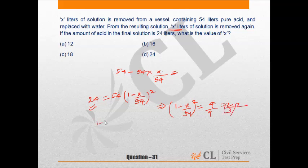So, 1 - X/54 = 2/3, which equals 1 - 1/3. Therefore, X/54 = 1/3. Hence, X = 18 liters.